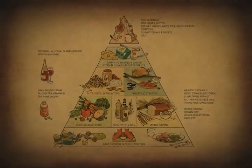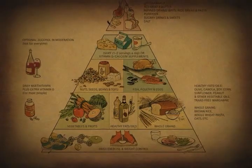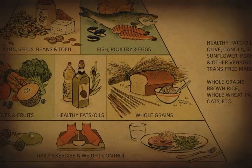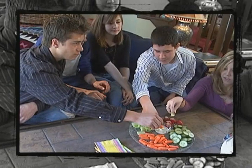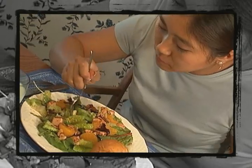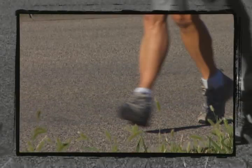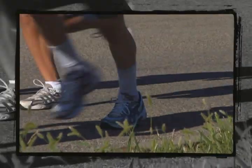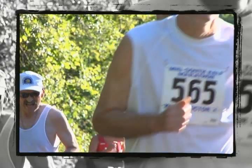A new food guide pyramid designed by researchers at Harvard University suggests that Americans need to eat more whole grains, fruits and vegetables, and less red meat and refined grains. Along with better food choices, reduced portion size and more exercise will help keep our digestive systems working well and our bodies healthy, now and into the future.